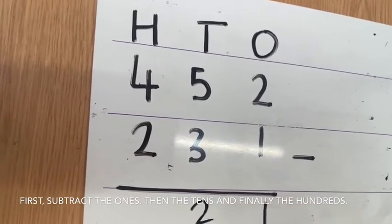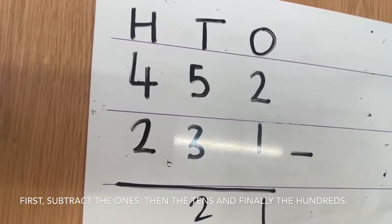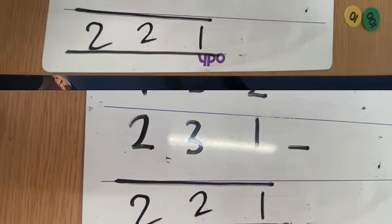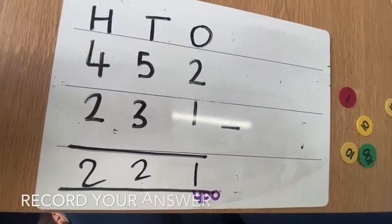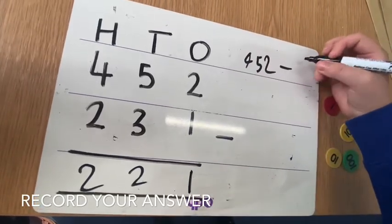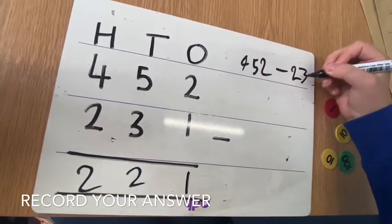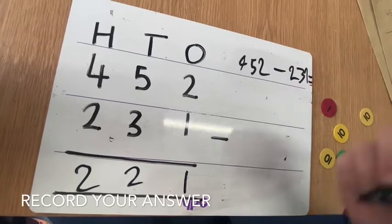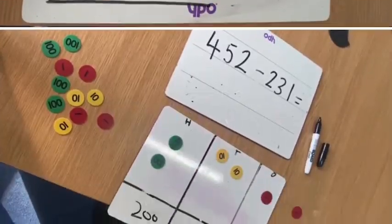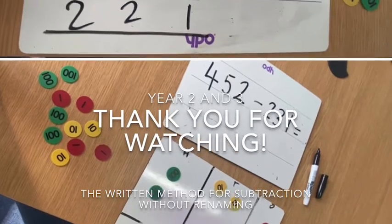Finally, the hundreds. 400 take away 200 equals 200. So now I'm going to record my answer. 452 subtract 231 equals 221.